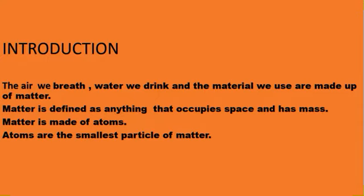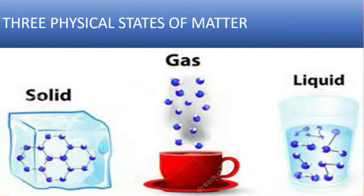Atoms are so small that you cannot see them with your eyes or even with a standard microscope. Matter can be grouped into solids, liquids, and gases based on physical characteristics.